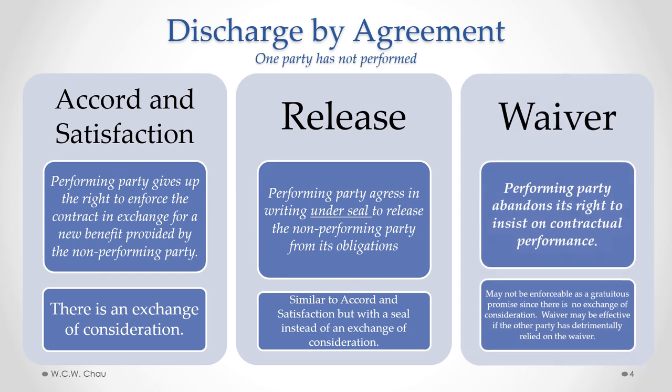The last type of discharge by agreement where one party has not performed is called a waiver. A waiver occurs where the performing party abandons its right to insist on contractual performance. Because there is no exchange of consideration, a waiver may not be enforceable as it is only a gratuitous promise. Courts have said, however, that in some situations a waiver may be effective if the other party has detrimentally relied on the waiver.